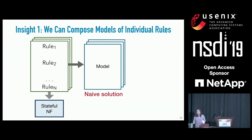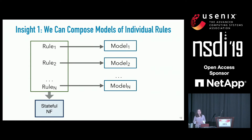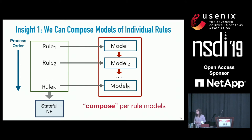Instead, if we can get a model for each concrete rule, and if we know the processing order of how rules are parsed by an NF, we can logically compose the models for individual rules. In the case of first-match semantics—where the first matched rule is applied—we can do: if packet matches rule one, apply model one; else if packet matches rule two; and so on. So we need a model per rule, but a rule also has a large search space due to IP and port fields.